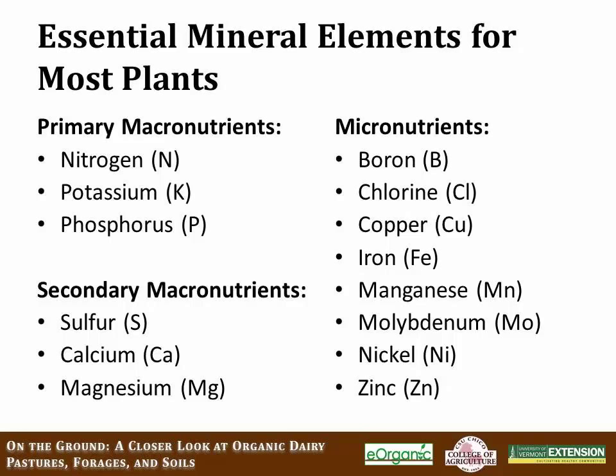They're grouped based on the relative quantity of the nutrient needed by the plant. A macronutrient is required in larger quantities, while a micronutrient is also required for growth and function of the plant but in very small quantities. They're all essential to plant productivity and health, and all required — just in different amounts.